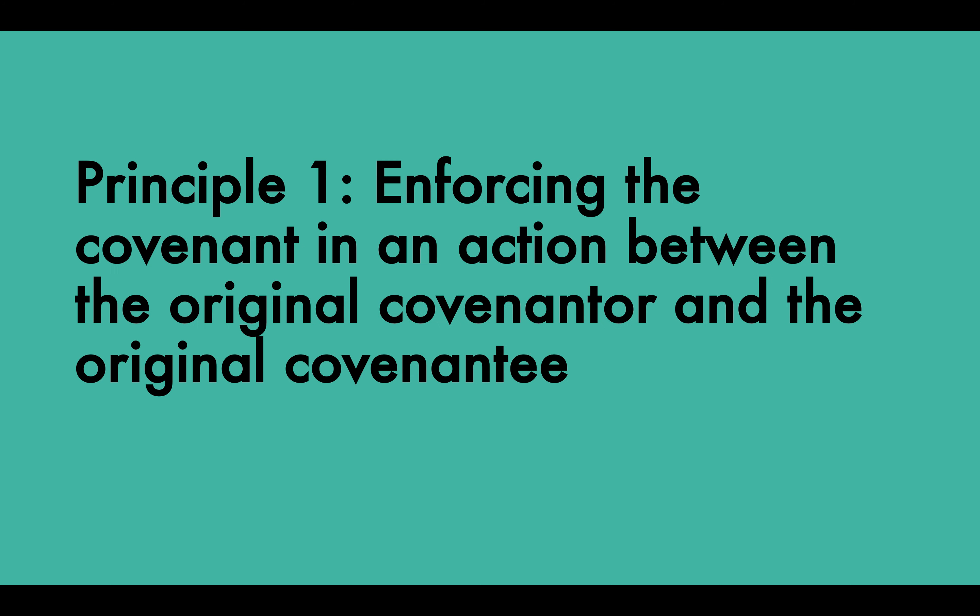Principle one: enforcing the covenant in an action between the original covenantor and the original covenantee. As a covenant is a contract, the covenantee may sue a covenantor at law or equity, and this reflects the privity between the original covenantee and the covenantor. However, because the benefits and burdens of certain types of covenants are transmissible to subsequent owners of both the original covenantor's and the original covenantee's land, a number of different situations must be identified.